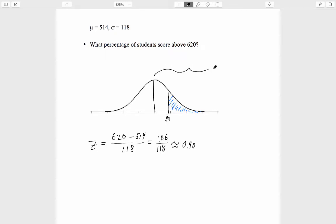We had a problem like this in an earlier video. Everything from 0 upward has a probability of 0.5. That 0.5 minus everything from 0 to 0.9 is exactly what we're trying to find out.